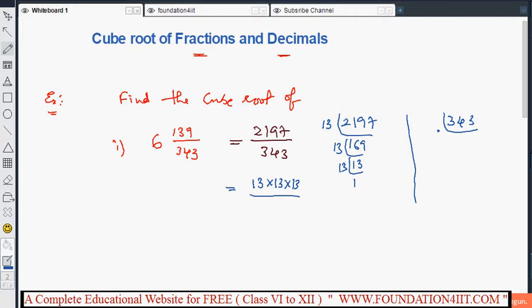Denominator is 343. This is obviously 7 table: 49, 7, 7, 49, 7. That is 7 into 7 into 7.